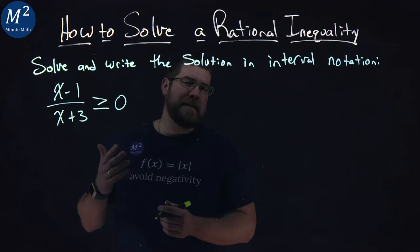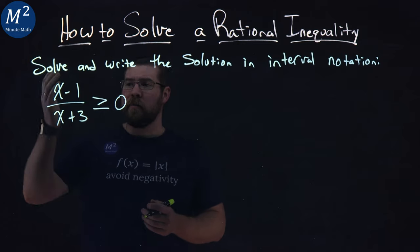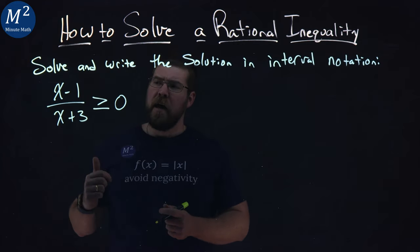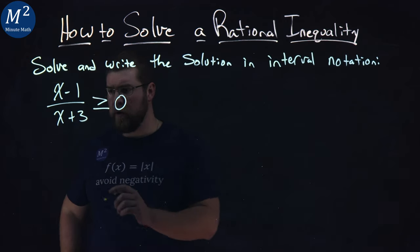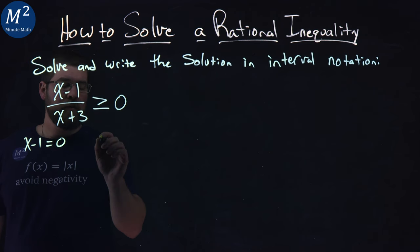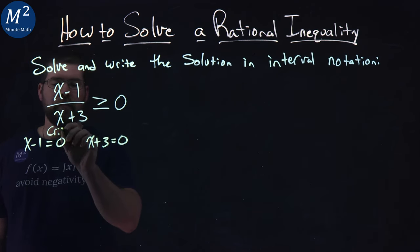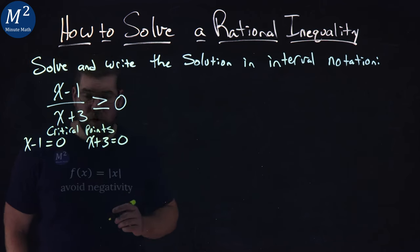Now we want to find our critical points. Our critical points are where the left side of the equation is equal to 0 or undefined. That happens when the numerator and denominator are both equal to 0. Numerator: x minus 1 equals 0, and denominator: x plus 3 equals 0. These are our critical points that we're looking for.